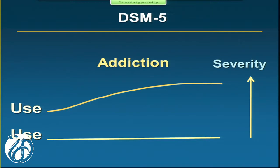So now we have 11 different symptoms. The more symptoms you have, the more severe. We generally say two symptoms is mild, up to four is moderate, and over that — up to 11 — is severe. And that goes for all the drugs.